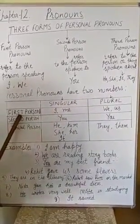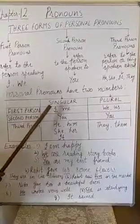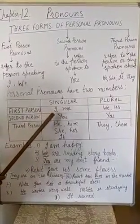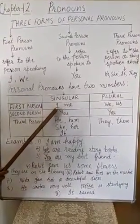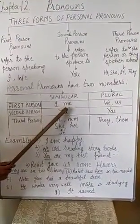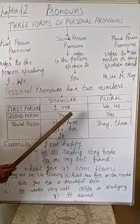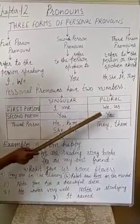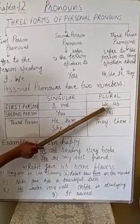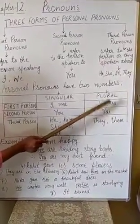First person pronouns in singular number are I and me. In plural, they are we and us.